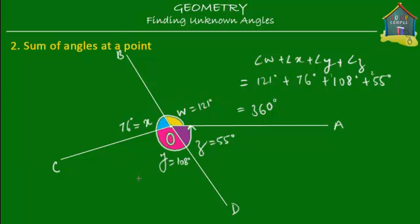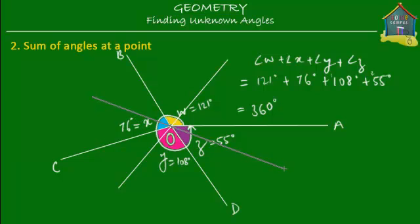You can make as many lines as you want between them. No matter how many lines you make, the total of all the angles at this point will always be equal to 360 degrees. Alright, so the second one is done. Now let's move on to the third and last one.